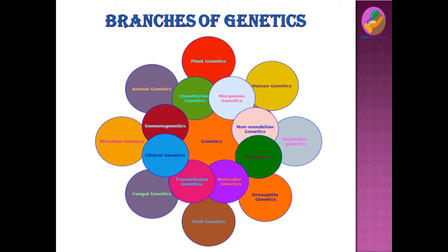Non-Mendelian genetics is different from Mendelian genetics because Mendel concentrated only on the nuclear genome. However, a cell also contains other types of genomes — extra-chromosomal genomes found in organelles like mitochondria and chloroplasts, which have their own genome. This branch studies heredity caused by extra-chromosomal genetic material. Next is cytogenetics, which provides cytological explanations for different genetic principles.